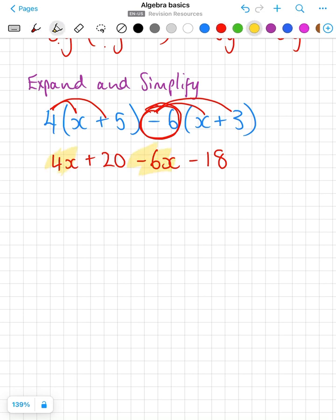Collect your like terms. 4x minus 6x is minus 2x, plus 20 minus 18 is plus 2.